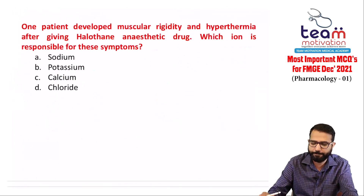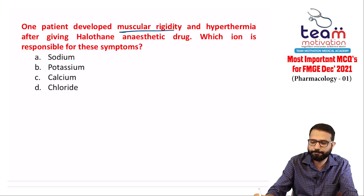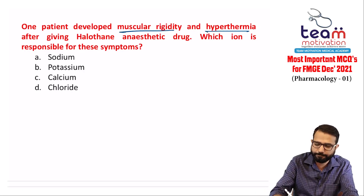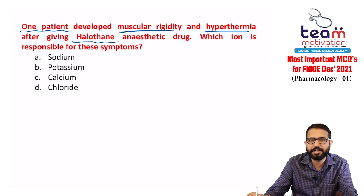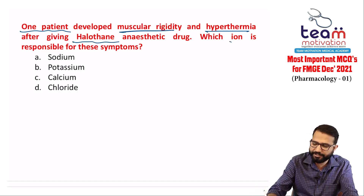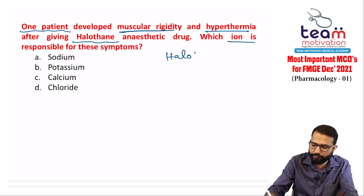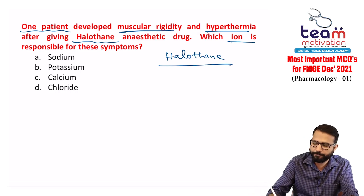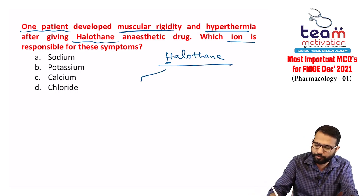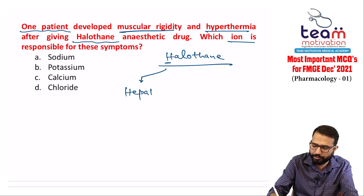Next question: a patient developed muscular rigidity and hyperthermia after receiving the halothane anesthetic agent. Which ion is responsible? Three important points about halothane: it causes halothane-induced hepatitis, it causes malignant hyperthermia, and it increases the sensitivity of adrenaline on the myocardium risking arrhythmias.